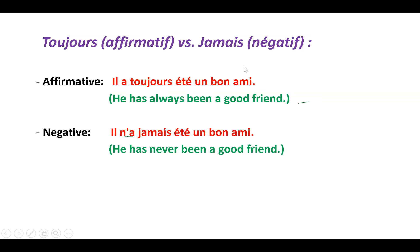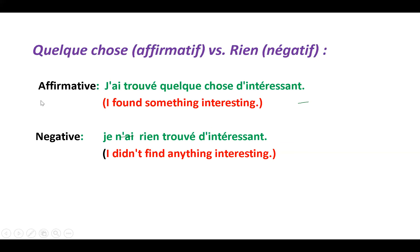In passé composé, 'toujours' (always) becomes 'jamais' (never) in negation. For example, 'il a toujours été un bon ami' — he has always been a good friend. Negation: 'il n'a jamais été un bon ami' — he has never been a good friend. 'Ne' comes before the auxiliary verb 'a,' then 'jamais,' then the past participle 'été.'